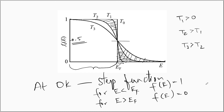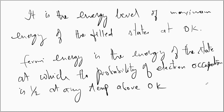At 0 Kelvin, the Fermi function looks like a step function, indicating all electronic states up to E_F are occupied with F(E) = 1, and all energy levels above E_F are unoccupied with F(E) = 0. As the temperature is increased, energy levels above E_F are also occupied by electrons. At all temperatures, the probability of finding the electron at the Fermi energy level is always 0.5, and Fermi energy is the energy of the state at which the probability of electron occupation is half at any temperature above 0 Kelvin.